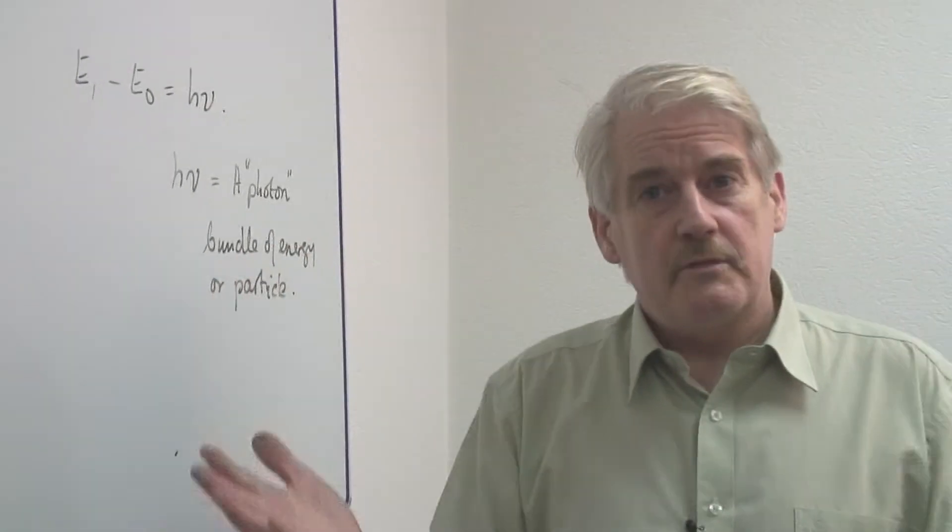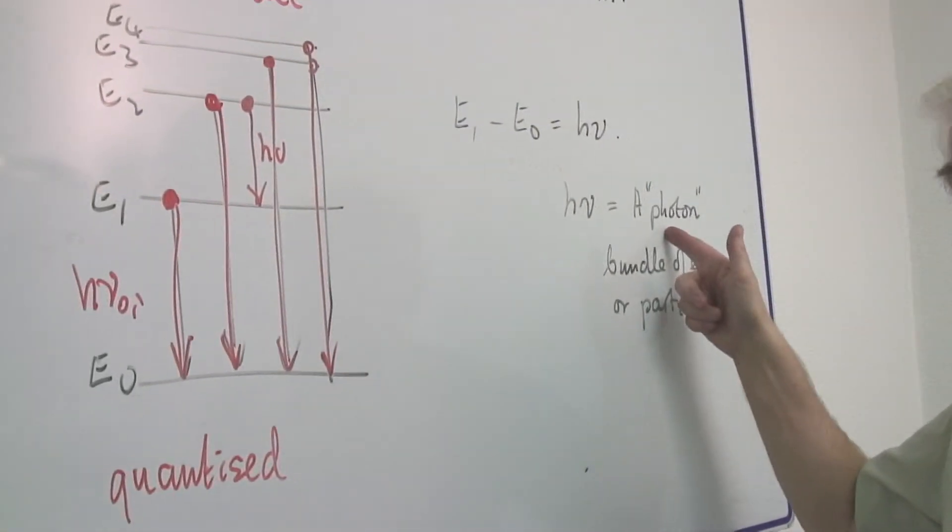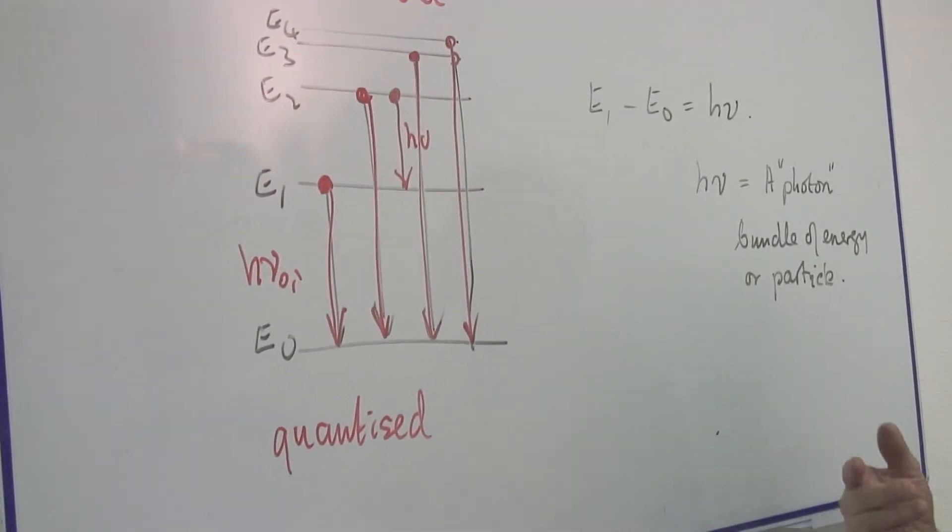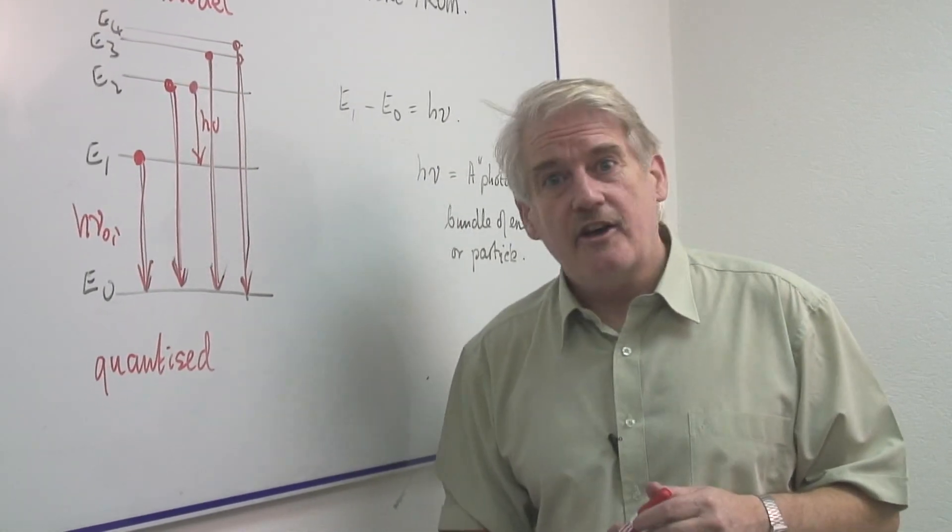But all materials, when they produce light, produce different bundles of photons. And these photons have different energies, which gives them different colours, whether you can see them or whether you can't.